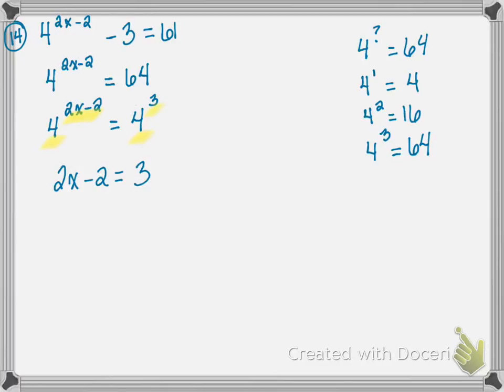At this point, I just solve. I have 2x minus 2 equals 3. I'm going to add 2 to both sides, and I get 2x equals 5. Then I divide both sides by 2, so my answer is x equals 5 over 2.